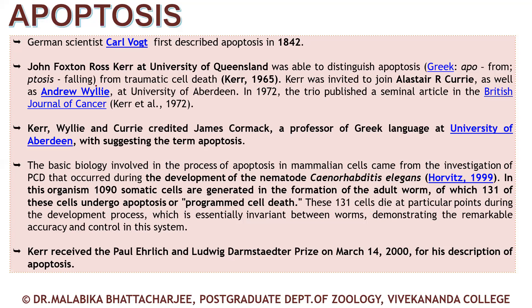The concept of cell death was first proposed in 1842 by Carl Vogt. Later, around 1965, at the University of Queensland, John Foxton Ross Kerr was able to distinguish apoptosis from traumatic cell death. Cellular death can be sudden and traumatic, or it can occur in a programmed manner. This distinction was first made by Kerr at the University of Queensland in 1965.